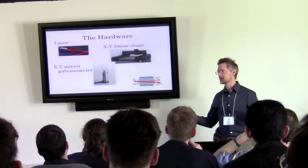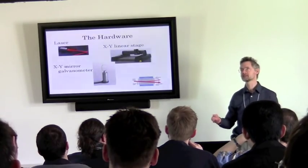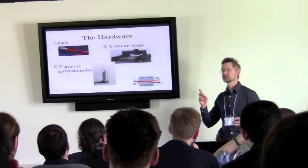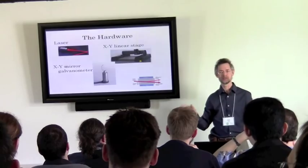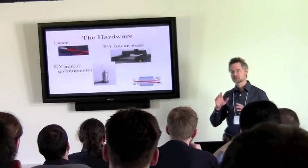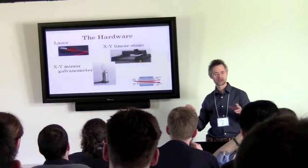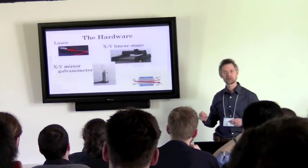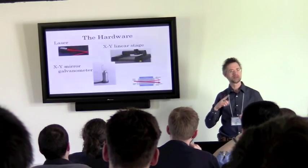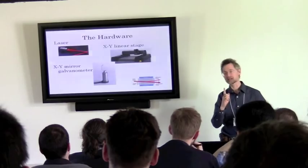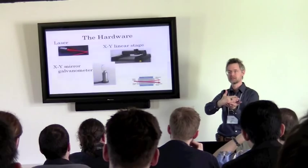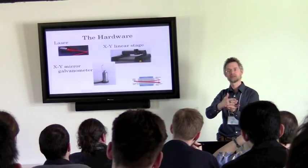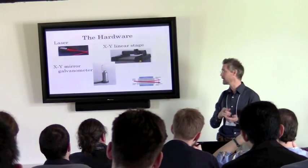The speaker explains the galvanometer using an analogy to old analog ammeters with needles. The mechanism inside the mirror galvanometer is exactly the same as the meter: as you run more current in, the meter deflects. Instead of hanging the mirror off the needle, you center the mirror on the post. As you run more current in, the mirror rotates. You can get very high rates of angular change to aim the laser at different places. With two of these — one for X, one for Y — you can aim the laser at many different positions.